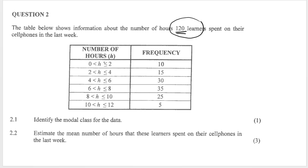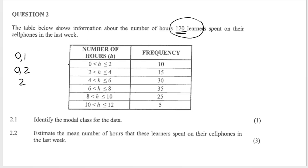It is very important to be aware of the symbols used. For example, things that fall into the first category would be values greater than 0 up to and including 2 hours. If you spent more than 2 hours but less than or equal to 4 hours, you fall in the second category, and so on.